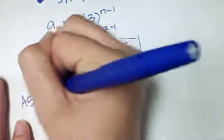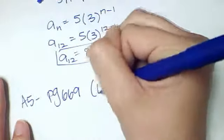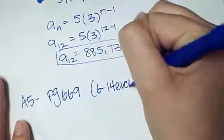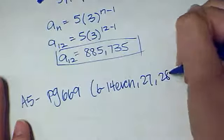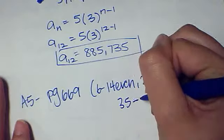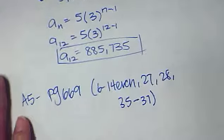Your assignment number 5 is page 669. It's numbers 6 to 14 even, 27, 28, 35 through 37. Good luck. Let me know if you have questions.